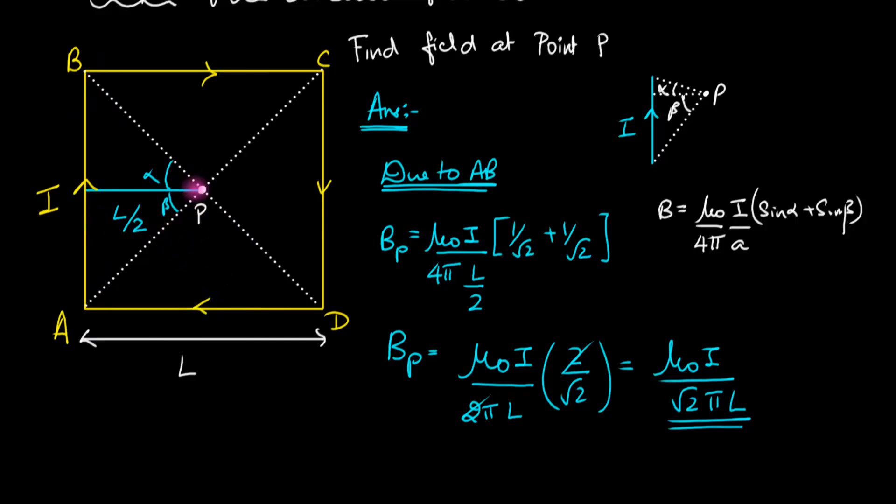Let's figure out the direction. The direction can be found using DL cross R. The DL vector is this way, and R vector is this way. Using the right-hand rule, the magnetic field is into the plane, into the screen.